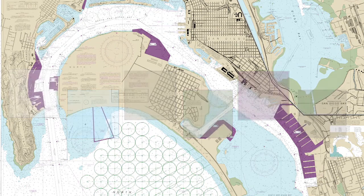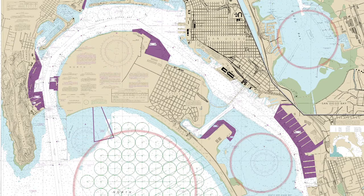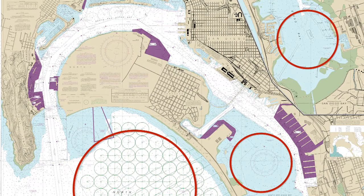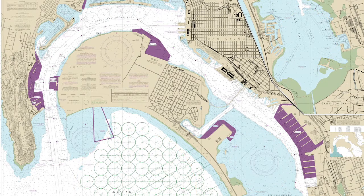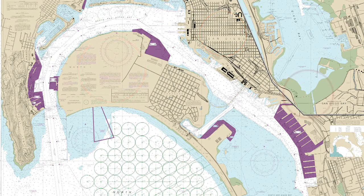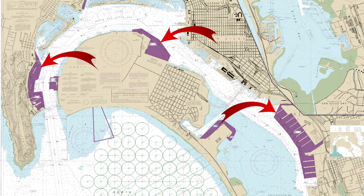Much of what you see on a nautical chart represents water areas. What colors do you see are used to depict water? That's right, light blue and white. What color depicts land? Light brown. Marshlands? Green. And restricted areas where boaters are not allowed are colored magenta or purple.